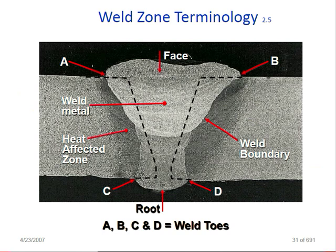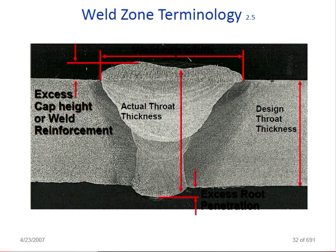Weld zone terminology: after finishing the weld, what are the zones? You can see zones A, B, C, and D. Zone A is the weld metal, B is near the fusion line, C is the heat affected zone, and D is the weld boundary — meaning up to which position the weld holds. Weld zone terminology also covers excess gap height, weld reinforcement, design throat thickness, and excessive root penetration.